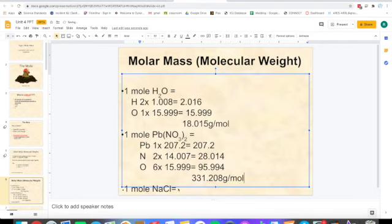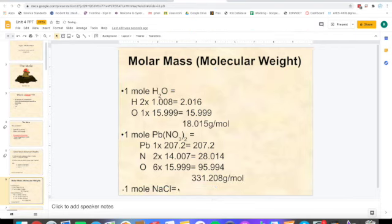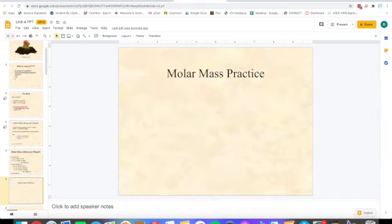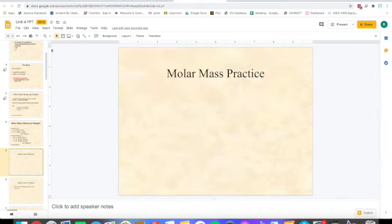In your notes, I want you to find the molar mass of NaCl. First you'll list the elements, then put how many of each element you have times the mass, and then you'll add those numbers up once you've done that for every element.